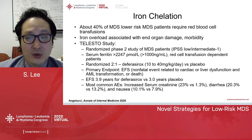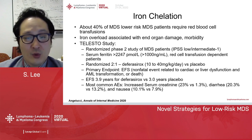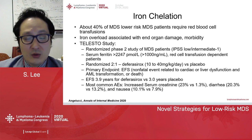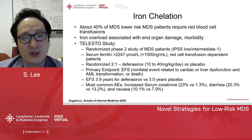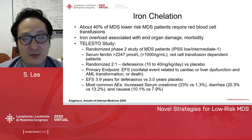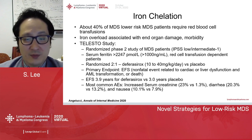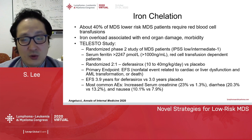The Telesto study has recently been published, which was a randomized prospective study of low-risk MDS patients comparing deferasirox versus placebo. This study began as a phase 3 study but was amended to a phase 2 study due to low enrollment. Inclusion criteria included patients with low to intermediate IPSS MDS, serum ferritin over 1,000, and red cell transfusion dependence. Patients were randomized 2-to-1 to receive deferasirox at doses ranging from 10 to 40 mg per kg per day versus placebo. Primary endpoint was event-free survival defined by non-fatal cardiac or liver dysfunction, AML transformation, or death. Median event-free survival was prolonged in the deferasirox group at 3.9 years compared to 3 years.